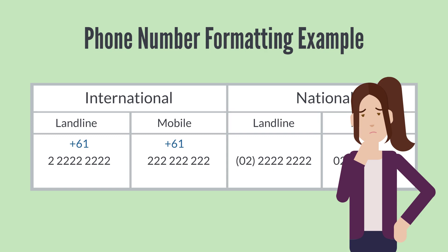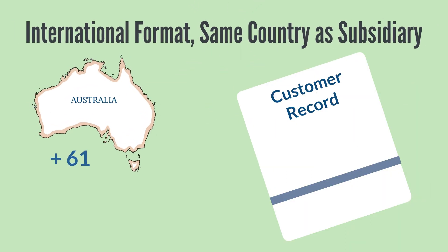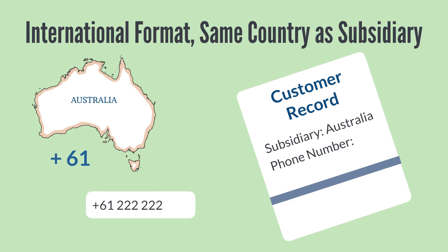Let's see how it would affect entering international numbers and national numbers. First, let's look at how NetSuite handles it when you enter a phone number for a specific country using its international code. In our case study, this might mean adding a phone number for your customer connected to your Australian subsidiary. If you enter the number using the international format with the plus 61, NetSuite will compare the number to the country on the subsidiary, recognize that the international code matches the country, and format the number according to the national format without the international code.